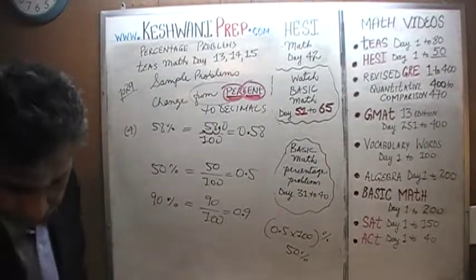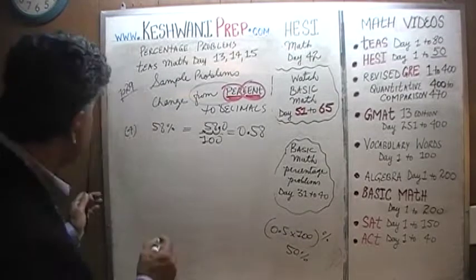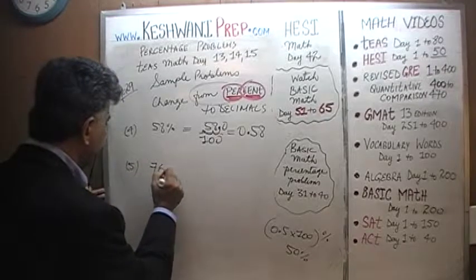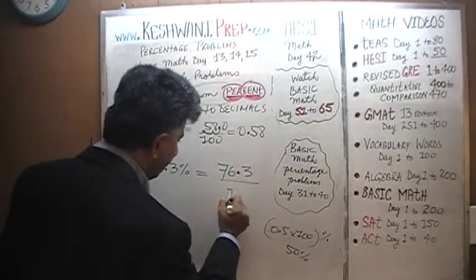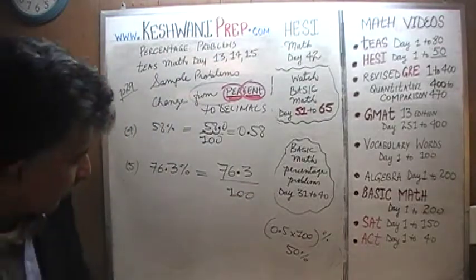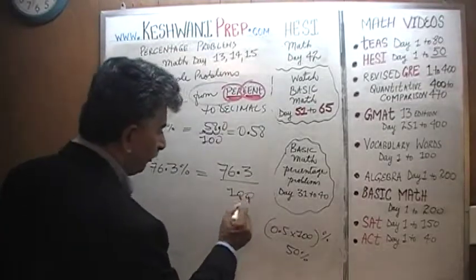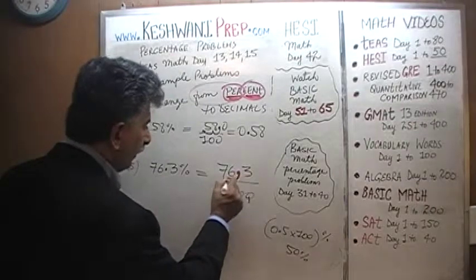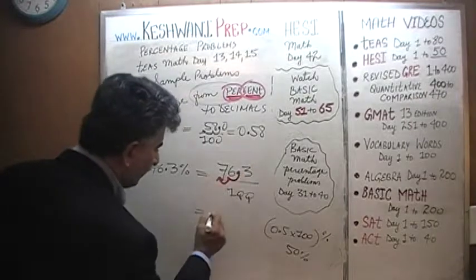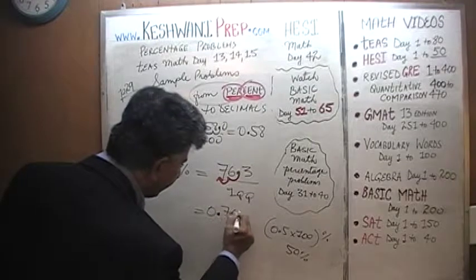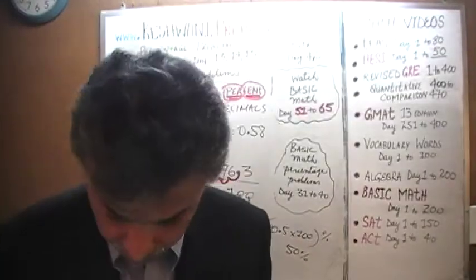Number 5: 76.3%. Same thing — divide by 100 by moving the decimal two places to the left. Why two spots? Because we are dividing by a quantity with two zeros. The decimal moves from after 76 to give us 0.763. So 0.763 is the same as 76.3%.